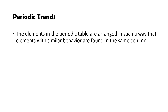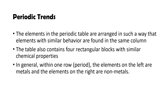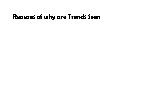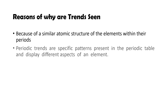The elements in the periodic table are arranged so that elements with similar behavior are found in the same column. The table contains four rectangular blocks with similar chemical properties. Within one period, elements on the left are metals and elements on the right are non-metals. Periodic trends exist because of the similar atomic structure of elements within their periods and the periodic nature of elements. These trends display different aspects such as atomic radius, electronic properties, melting point, electronegativity, ionization energy, electron affinity, and metallic character. Using these trends, chemists can quickly predict an element's properties.